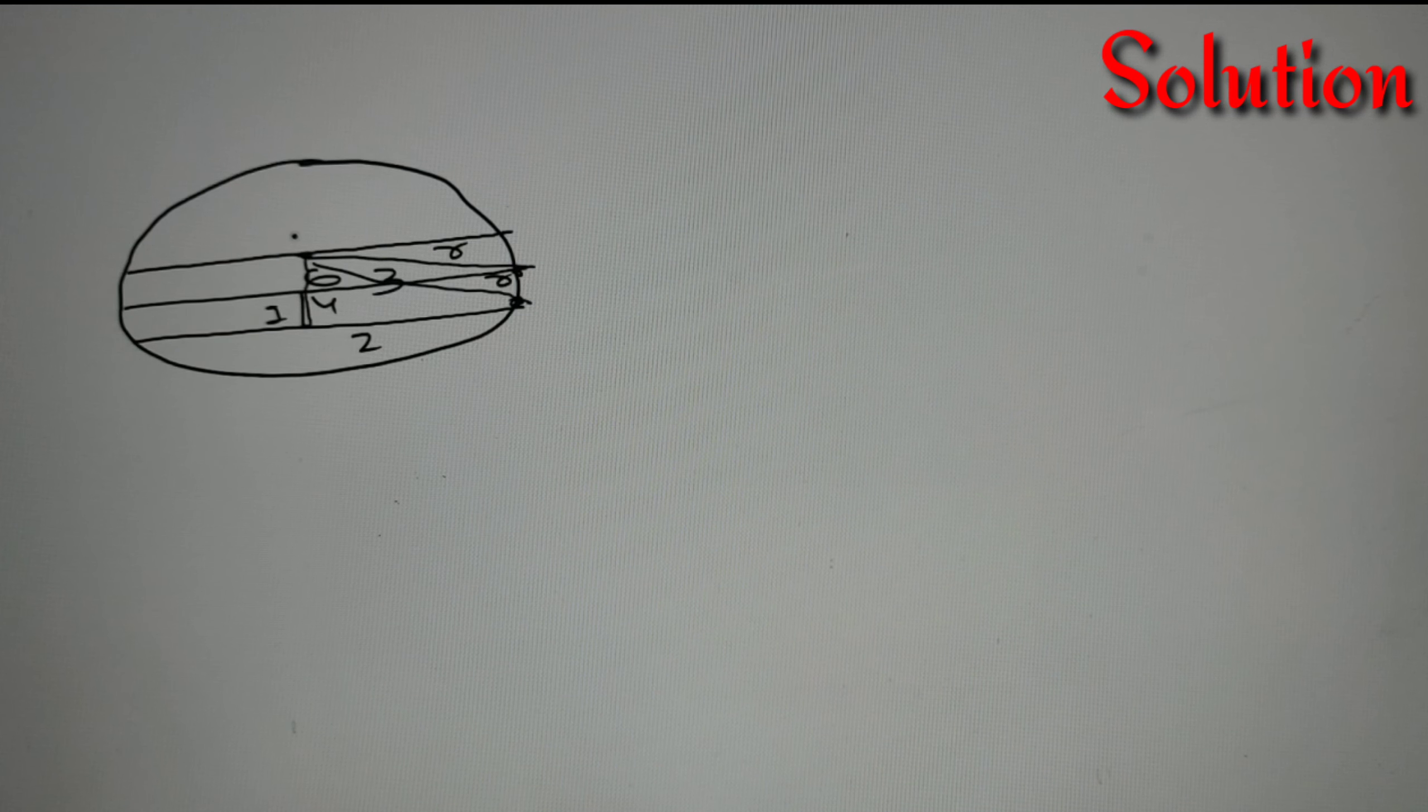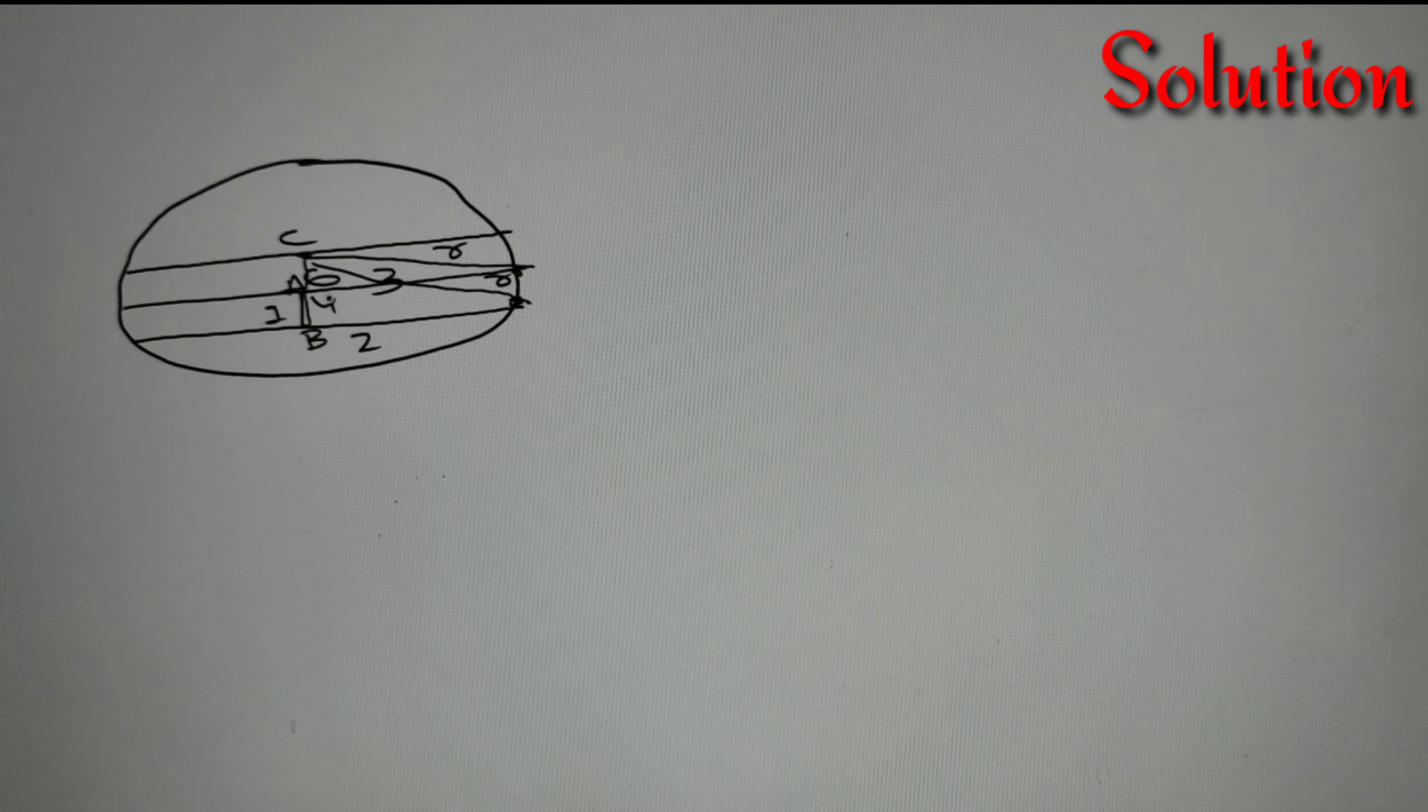Now let's take this center as C and this point as A and this point as B. So AB is given as 1 according to our given question and let's take CA as X.